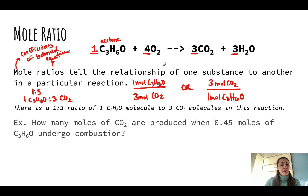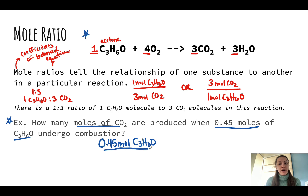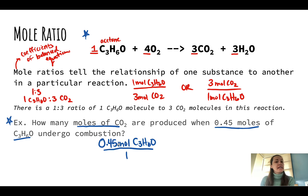So our question — I want you to write down your balanced equation and then the sample question as well. This question is: how many moles of CO2 are produced when 0.45 moles of acetone undergo combustion? So we're going to start with our given information, the 0.45 moles of acetone, C3H6O. It is important that we write our unit and also a label. The unit is mole and the label is C3H6O — it's basically moles of what? It's moles of acetone. We're interested in the relationship between the acetone and the carbon dioxide. We have a 1 to 3 relationship.